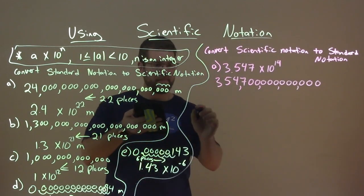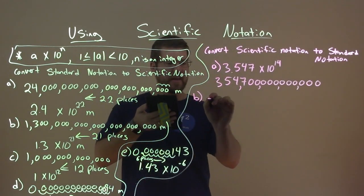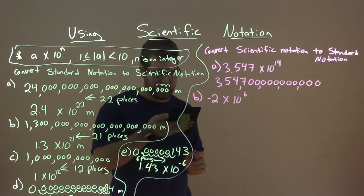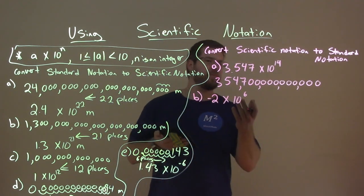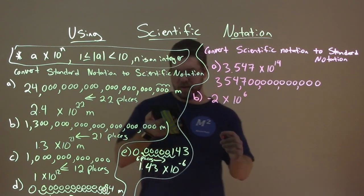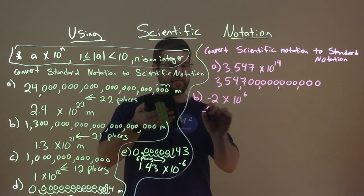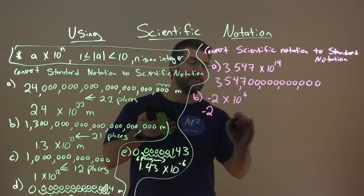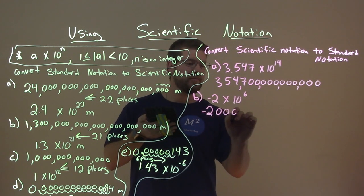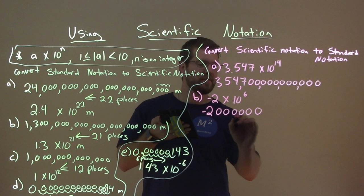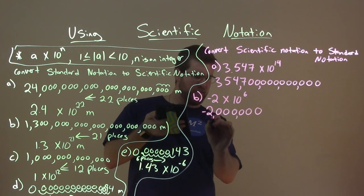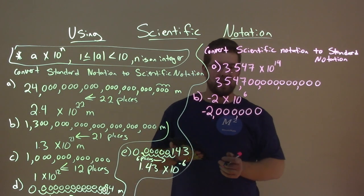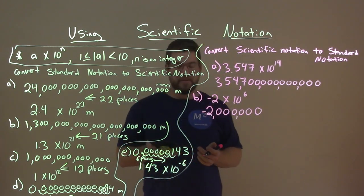B is negative 2 times 10 to the 6th power. A positive 6th power means 6 places to the right. We have a negative 2, the decimal point is here, so we move to the right adding zeros: 1, 2, 3, 4, 5, 6. Negative 2 with 6 zeros after it — our answer is pretty easy.